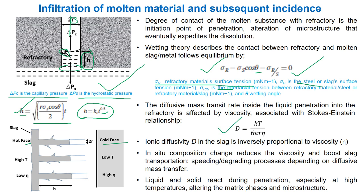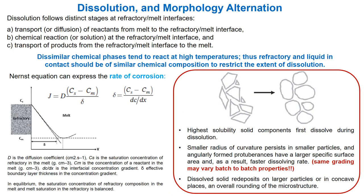Ionic diffusivity D in the slag is inversely proportional to the viscosity. Liquid and solid react during penetration especially at high temperatures, altering the matrix phases and microstructure. The dissolution follows distinct stages at the refractory-melt interface.